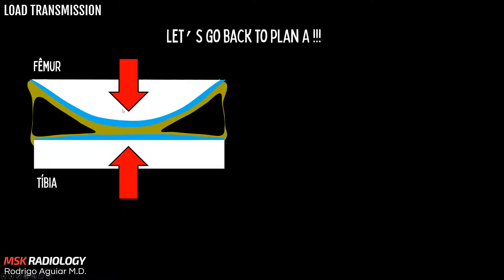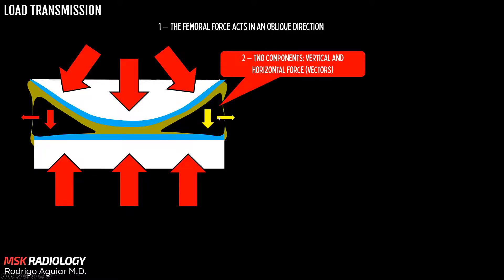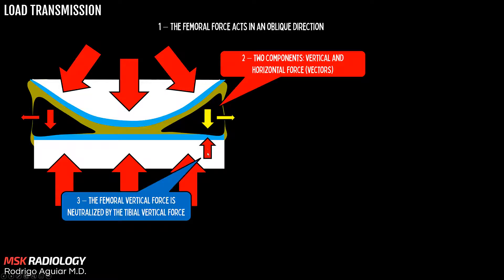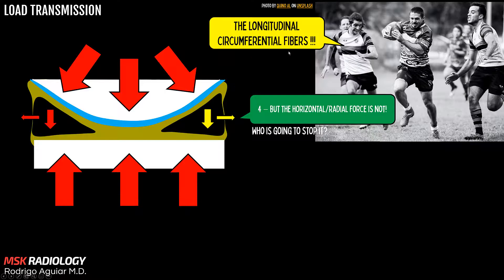During normal loading, the meniscus is compressed by the downward force of the femur. This femoral force acts in an oblique direction because of the meniscal shape and can be divided into two components: vertical and horizontal forces. The femoral vertical force is neutralized by the tibial vertical force, but the horizontal force or vector is not. This tensile force runs radially and tends to open and extrude the meniscus — that's the hoop stress force. And the answer to who neutralizes it is the longitudinal circumferential fibers.